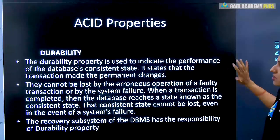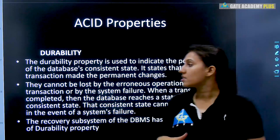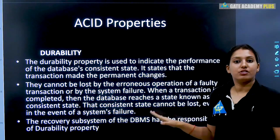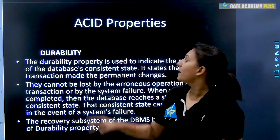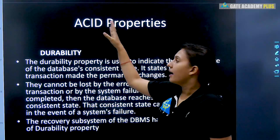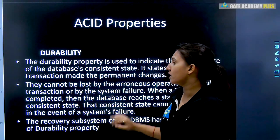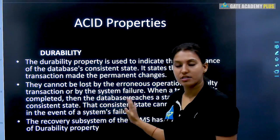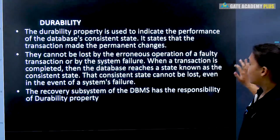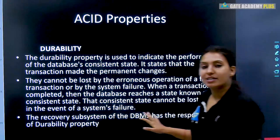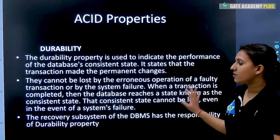So this is the ACID property — just a theory part — about how our transactions should not be affected and how they work. Transactions must have ACID properties: Atomicity, Consistency, Isolation, and Durability. You will be asked about these in the exam, and you can write these answers well. Next, we will read the further topics of transactions. For now, this topic ends here — ACID properties are this much.